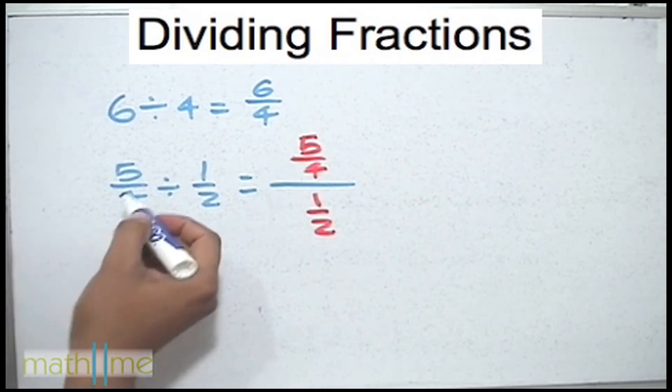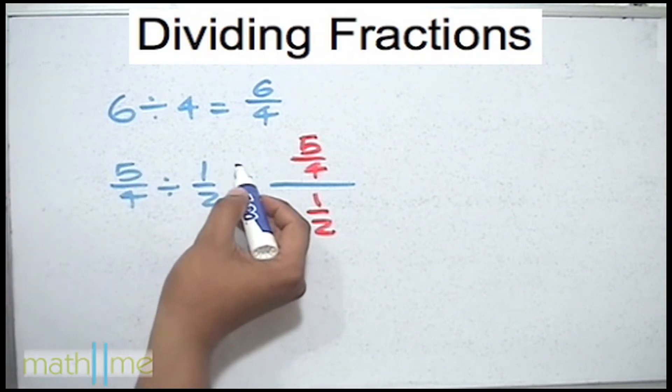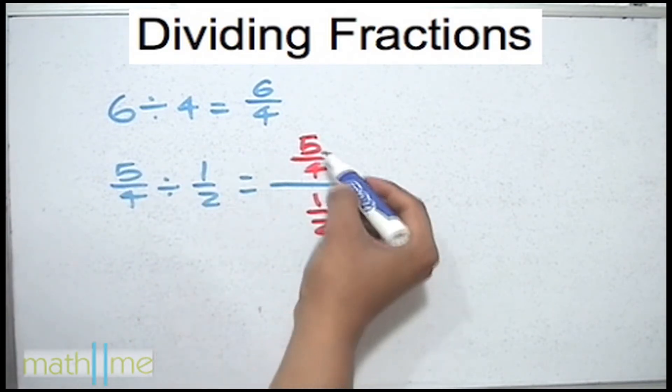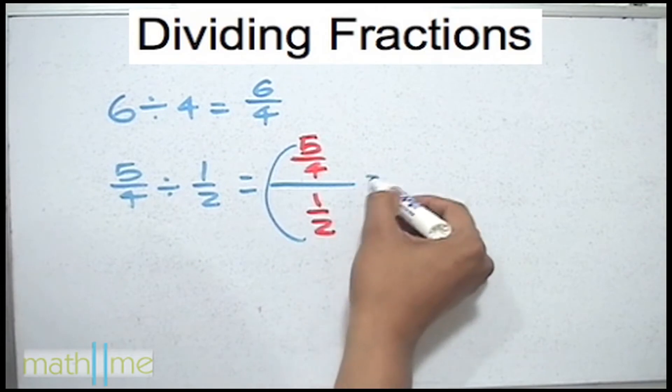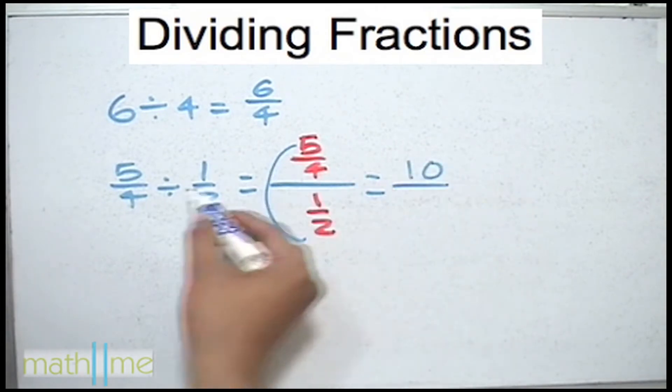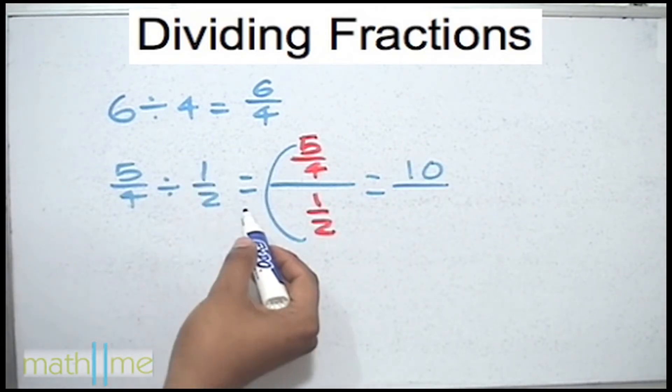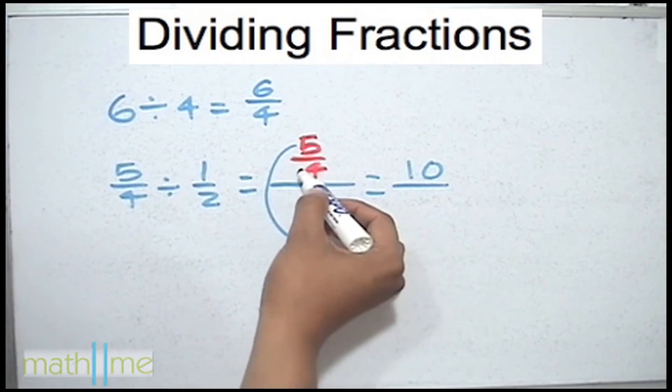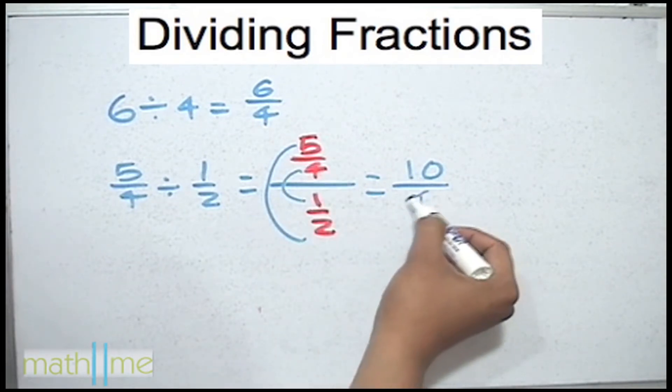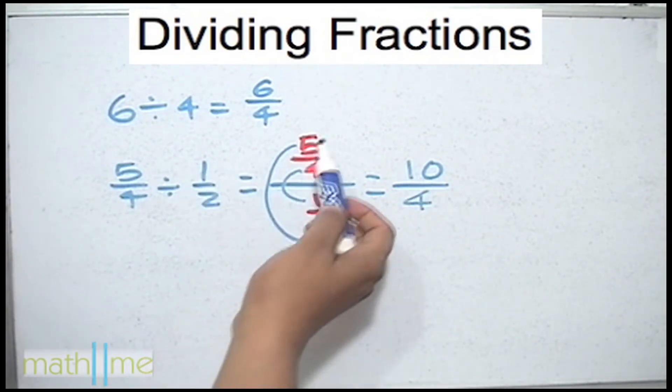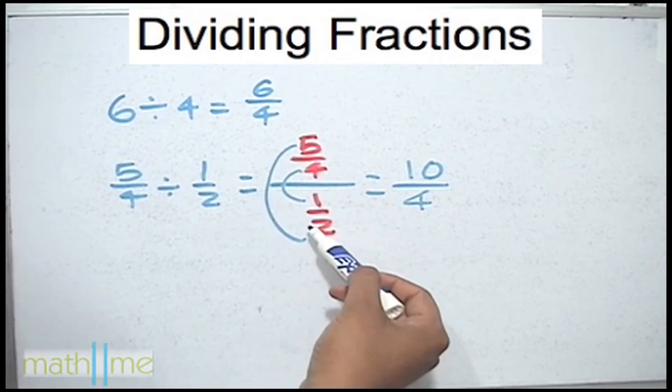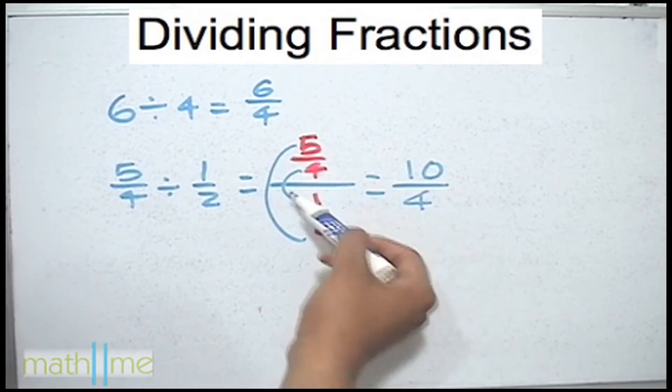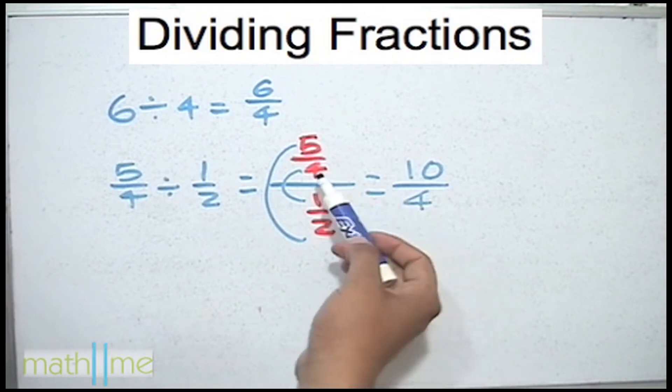If we remember the cross multiplying procedure, multiplying 5 times 2 and the result going up, so 5 times 2 equals 10, and 4 times 1 the result will go down, multiplying 4 times 1 equals 4. Then when we have a problem like this one we know that outside numbers are multiplying and go up and inside numbers are multiplying and go down.